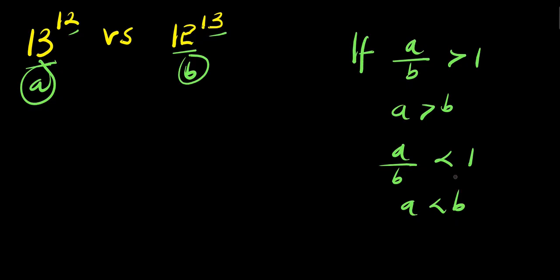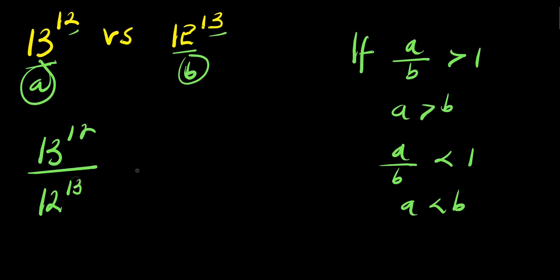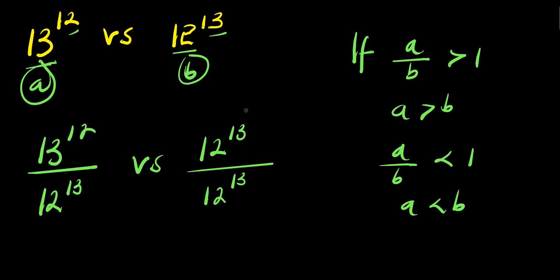So let's do that right away. We have a, which is 13 power 12, and we are going to divide it by b, which is 12 power 13. And on the other side we have 12 power 13 divided by 12 power 13 — these cancel to give us 1. That is why we are comparing everything to 1.